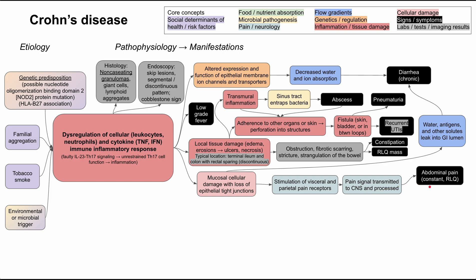The abdominal pain is usually constant and typically in the right lower quadrant — similar to where a mass might be felt in patients with stricture or scarring. Together, the diarrhea and abdominal pain may lead to food avoidance. The patient might present with anorexia, afraid to eat because they know that eating causes pain and diarrhea. That's not uncommon for these patients.